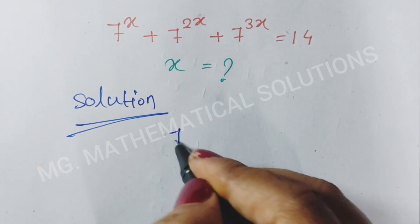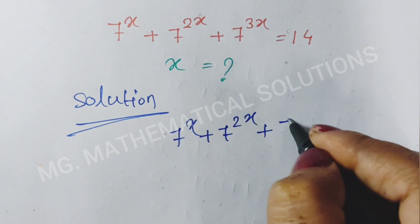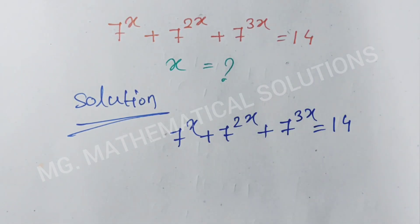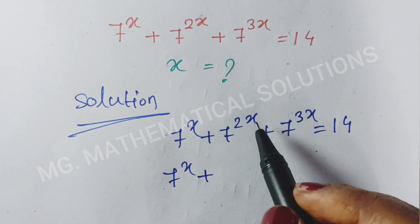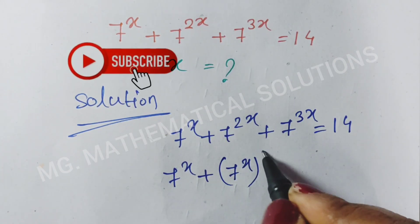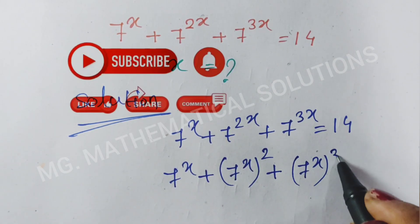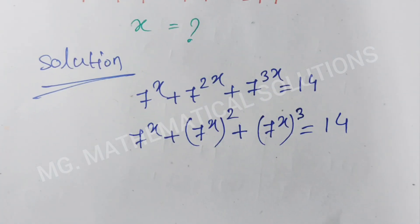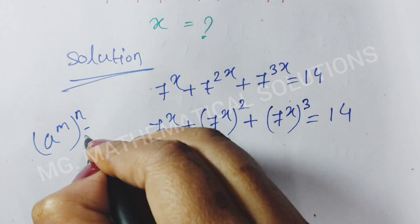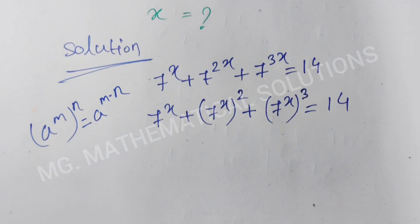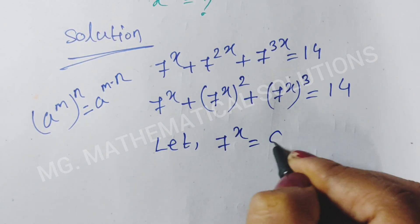We rewrite this equation. So 7 to the power x plus 7 to the power 2x plus 7 to the power 3x equal to 14. We write the second term as 7 to the power x whole to the power 2, and the third term as 7 to the power x whole to the power 3, equal to 14. Here we use the formula a to the power m whole to the power n equal to a to the power m times n. Now let 7 to the power x equal to a.